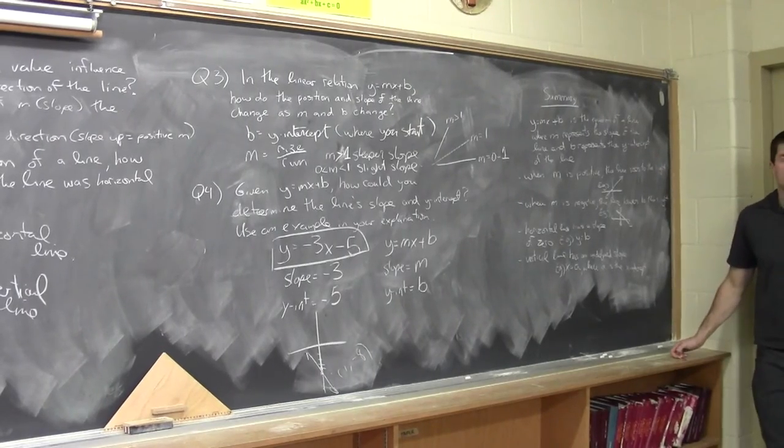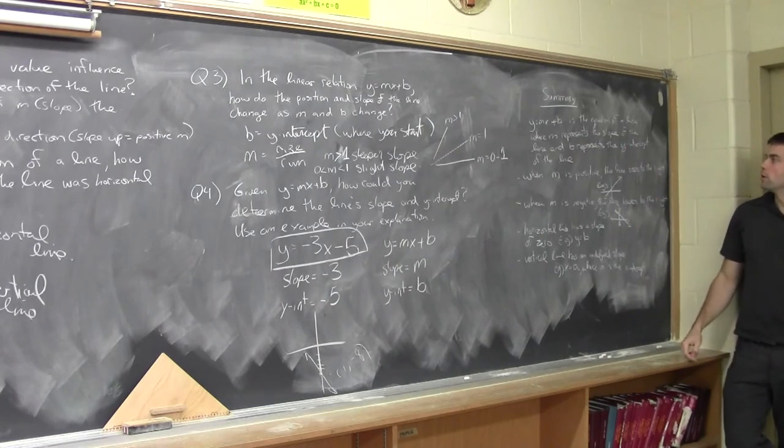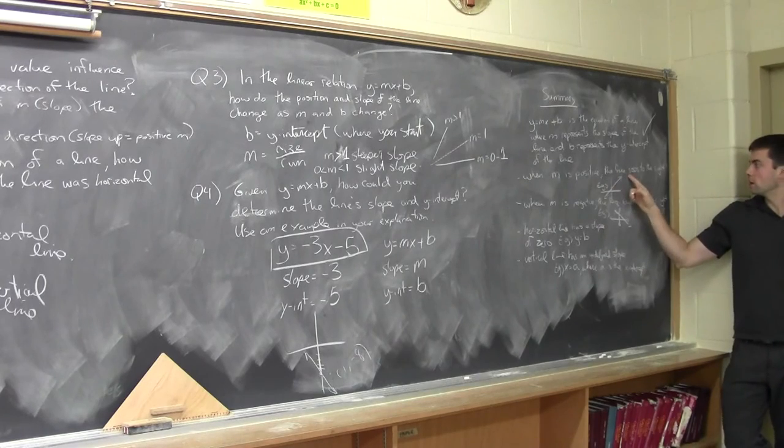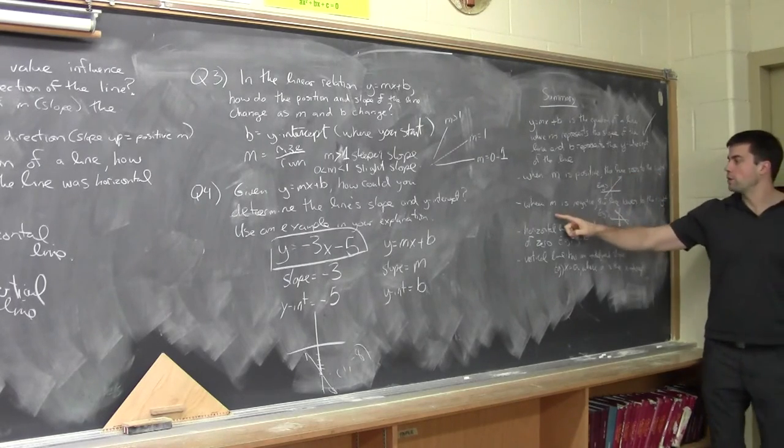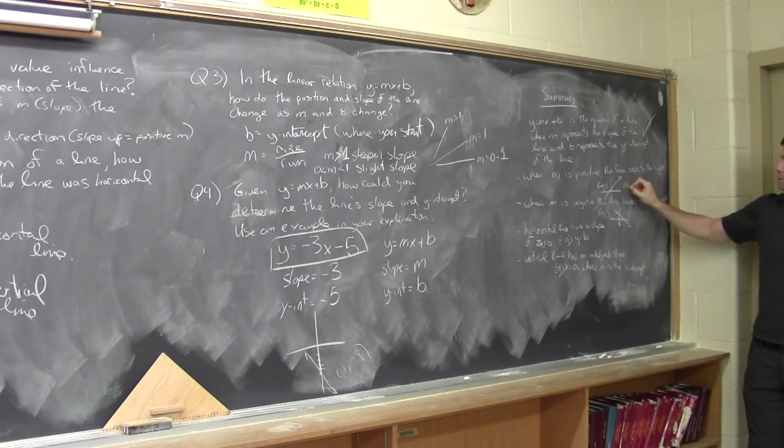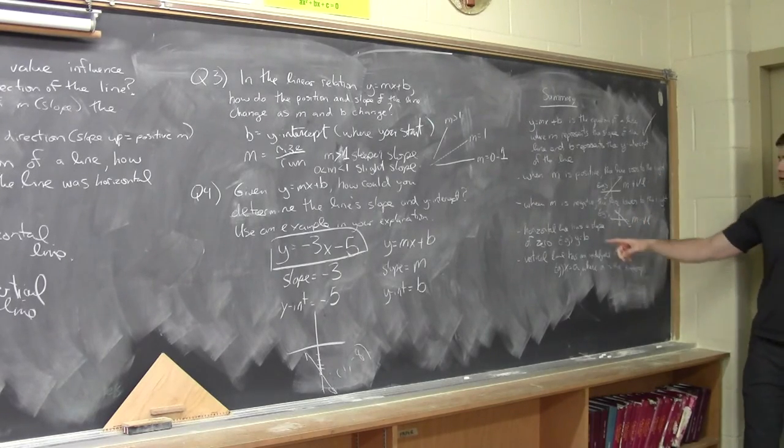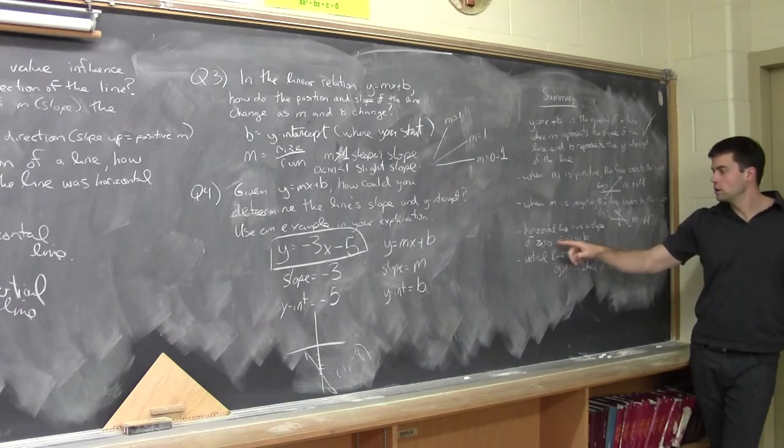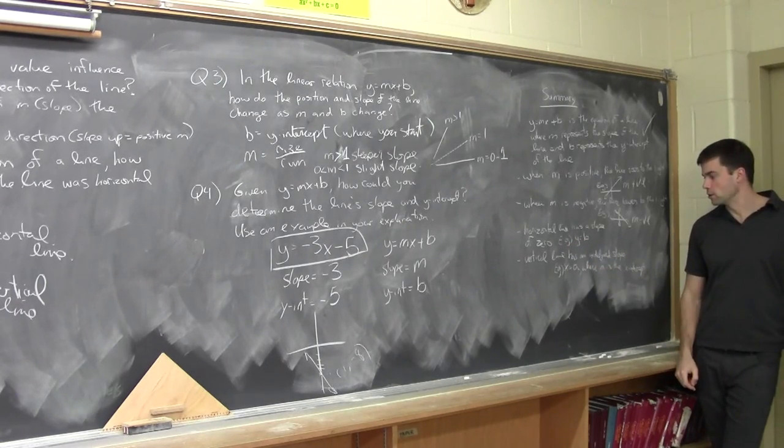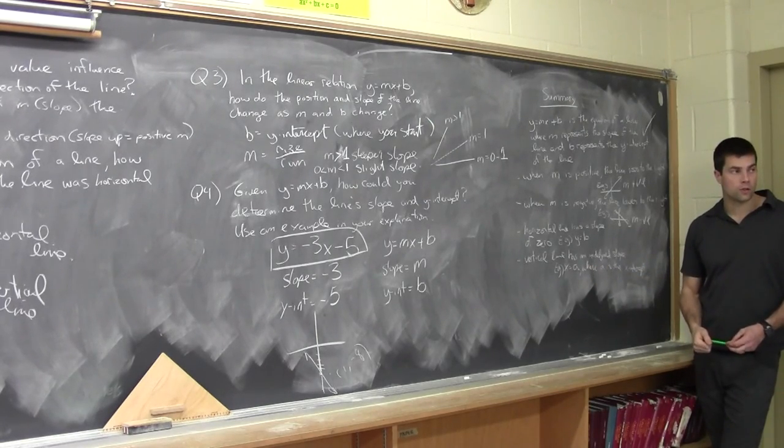Finally, summary. Y equals MX plus B is the equation of a line where M represents the slope of the line and B represents the Y intercept of the line. Where M is positive, the line rises to the right. When M is negative, the line lowers to the right. Just review. This is M is positive. And this is M is negative. Horizontal line has a slope of 0. For example, Y equals B. And the vertical line has an undefined slope. And X is A where A is the X intercept. Any questions with the lesson at all?